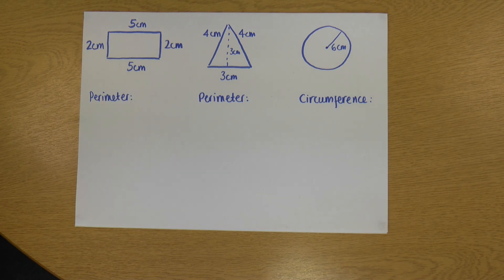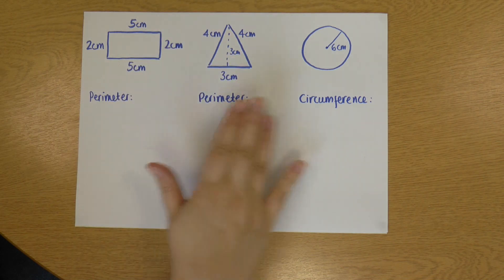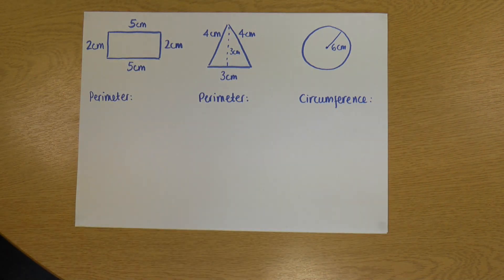Hi, this is Rachel and we're going to look at perimeter and area of shapes. So I have three shapes here: a rectangle, a triangle, and a circle. And I'm going to find the perimeter and then the area of each.